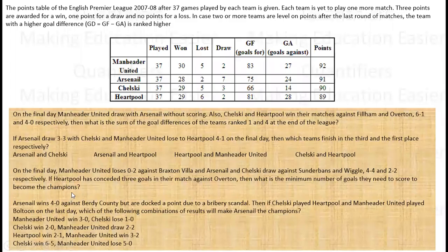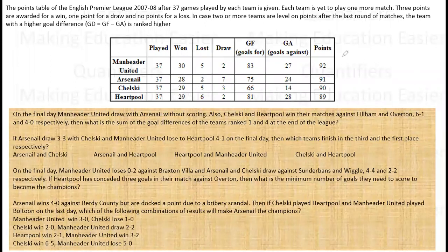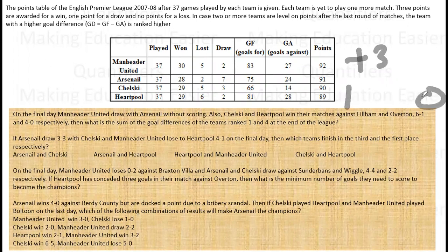The question says: this is a point table of English Premier League 2017-18 after 37 games played by each team. There is some data given to us after the 37 games. Each team is yet to play one more match. Three points are awarded for a win, one point for a draw, and zero points for a loss.